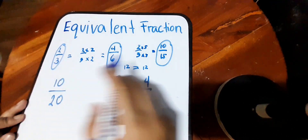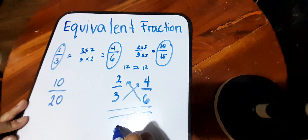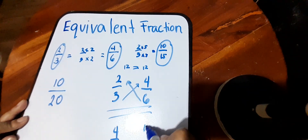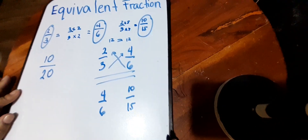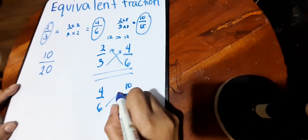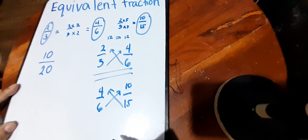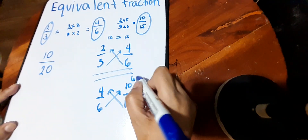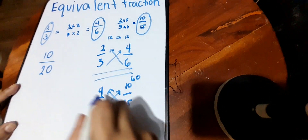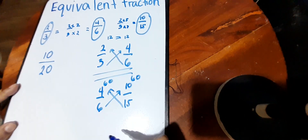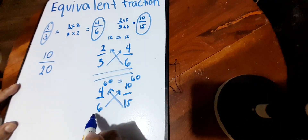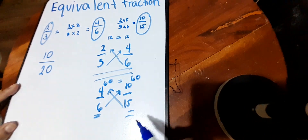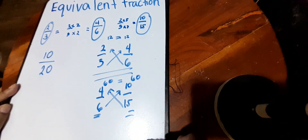Let's see if four-sixths and ten-fifteenths are also equivalent. So again, we cross multiply. Six times ten is sixty. Fifteen times four is also sixty. So since their products are also the same, then four-sixths and ten-fifteenths is also an equivalent fraction.